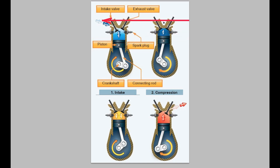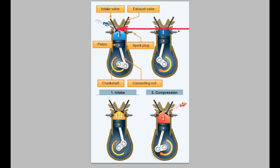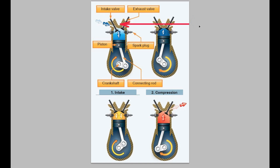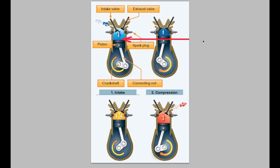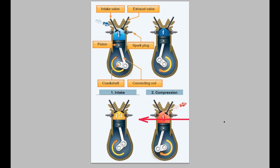In a carbureted system, the piston going down draws the air-fuel mixture in together. In a fuel-injected system, only air is drawn into the cylinder and the fuel is injected later — that's basically the difference. With a carburetor, fuel and air are drawn in simultaneously through the intake manifold. With fuel injection, only air is drawn in and fuel is injected later. The rest is the same: intake, compression, power, exhaust.